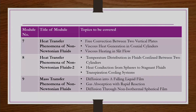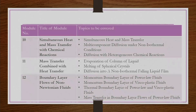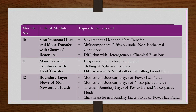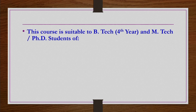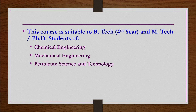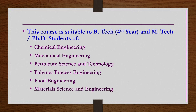The next two weeks cover heat transfer problems, and week nine covers mass transfer problems. Weeks ten and eleven discuss mass transfer combined with heat transfer and chemical reactions. The last week covers boundary layer flows when the fluid is non-Newtonian. This course is generally useful for M.Tech and Ph.D. students in chemical engineering, mechanical engineering, petroleum science and technology, polymer processing engineering, food engineering, material science and engineering, and related branches.